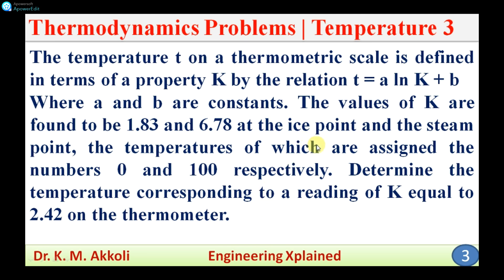Determine the temperature corresponding to a reading of K equal to 2.42 on the thermometer. The variation of temperature is given by the linear equation T = A·ln(K) + B, where A and B are constants to be determined by using the ice point and steam point values of K that are given.